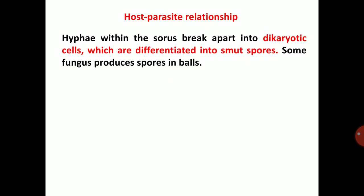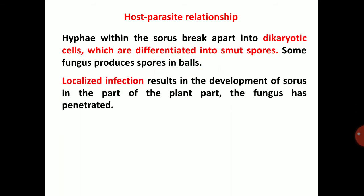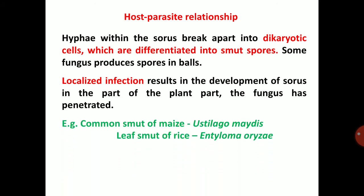Sorus means a ball-like structure — a black color ball-like structure produced by the combination of small minute spores coming together to form one ball called a sorus. The hyphae within the sorus break apart into dikaryotic cells which are differentiated into smut spores. Some fungi produce spores in balls — these are called sorus. Localized infection results in the development of a sorus in the part of the plant the fungus has penetrated — example: common smut of maize, Ustilago maydis; leaf smut of rice, Entyloma oryzae.